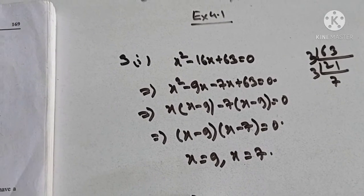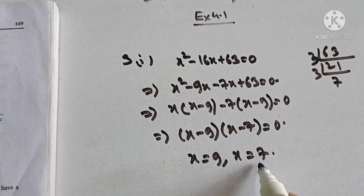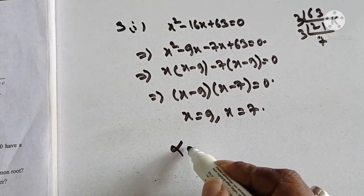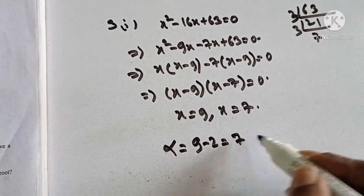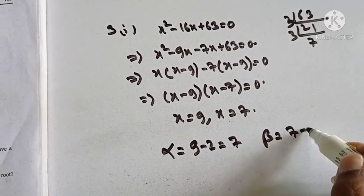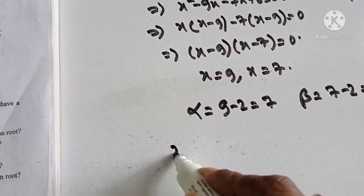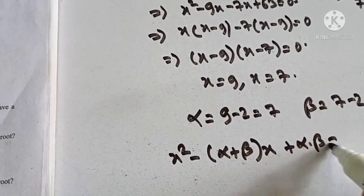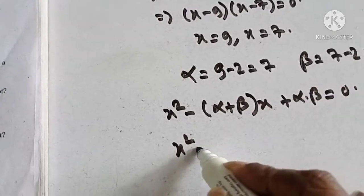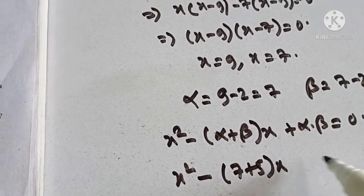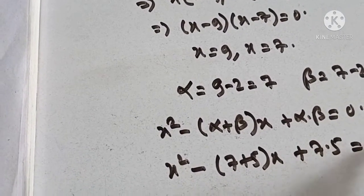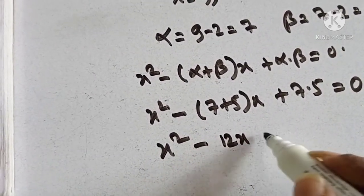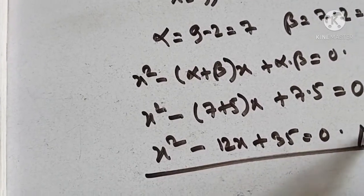Now I have to find a quadratic equation whose roots are 2 less than these. So my new roots will be alpha equal to 9 minus 2, that is 7, and beta equal to 7 minus 2, that is 5. The quadratic equation is x squared minus (alpha plus beta)x plus alpha times beta equal to 0. So x squared minus (7 plus 5)x plus 7 times 5 equal to 0, which gives x squared minus 12x plus 35 equal to 0. This is your answer.